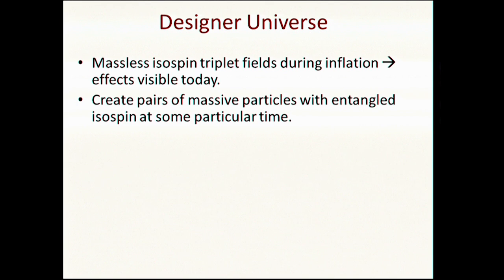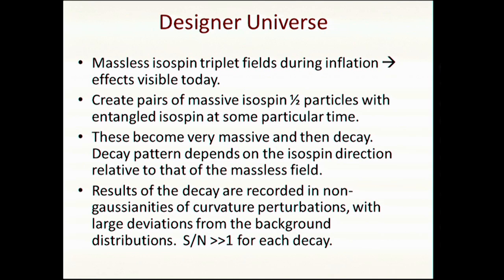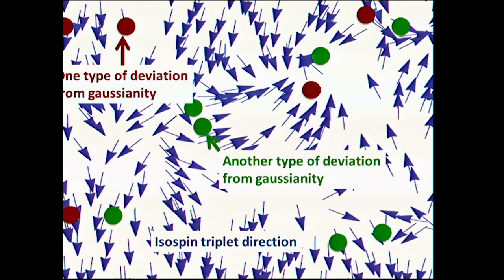Then, in addition, we'll assume that there are massive particles that are isospin doublets that get created during inflation. They get created at some particular time during inflation, because perhaps they were very massive, they became light, and then they become massive again. These particles get created and they decay. When they decay, they decay in a way that depends on the relative spin projection of the isospin doublet and the triplet background fields. They decay into ordinary curvature fluctuations. They decay in a way that they create a disturbance which has local high signal-to-noise ratio, so that you can get new patterns of non-Gaussianities which are visible event by event.